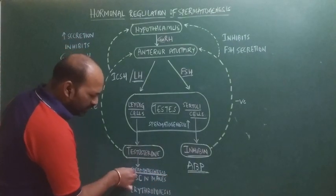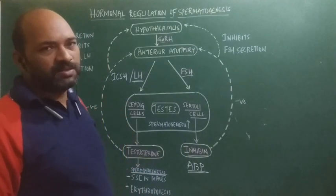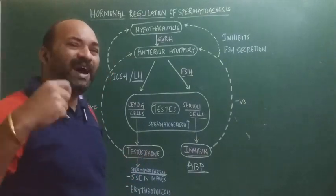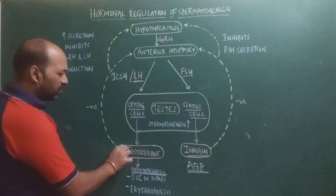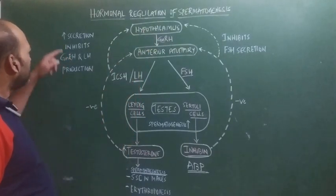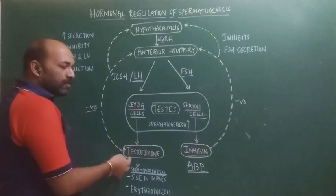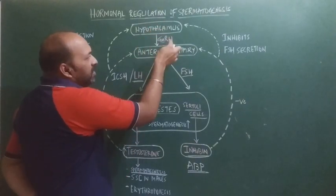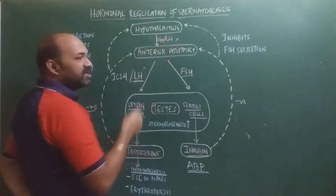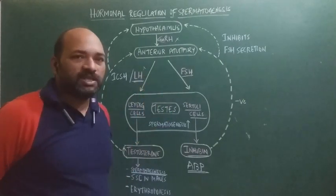Testosterone is mainly involved in spermatogenesis and increases the process of spermatogenesis. However, once testosterone levels start increasing and become very high in concentration, that high concentration gives a negative feedback to the anterior pituitary and hypothalamus. As noted, increased secretion inhibits GnRH, LH, and FSH production. The increased production of testosterone gives a negative feedback, thereby inhibiting the secretion and release of GnRH, and if GnRH is inhibited, then the anterior pituitary cannot release FSH and LH.